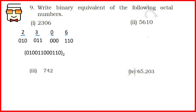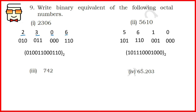For the second part, 5610: 5 is 101 in binary, 6 is 110, 1 is 001, and 0 is 000. Writing them together: 101, 110, 001, 000 in the binary number system.